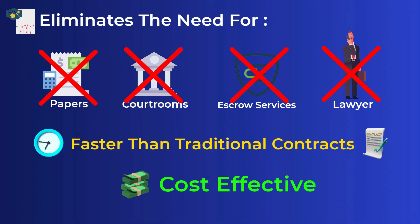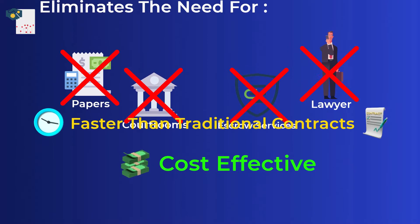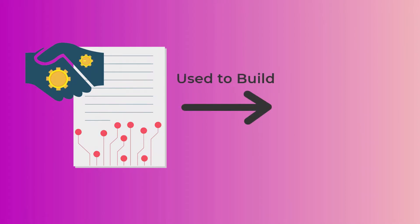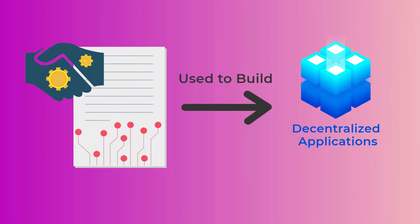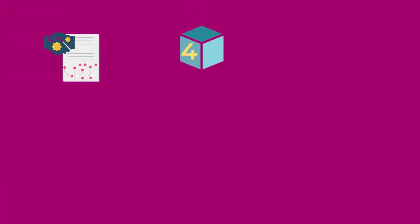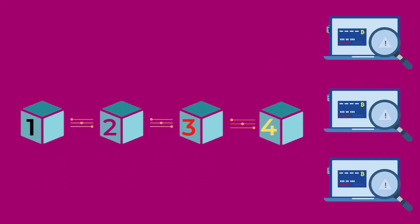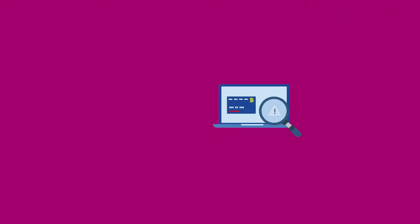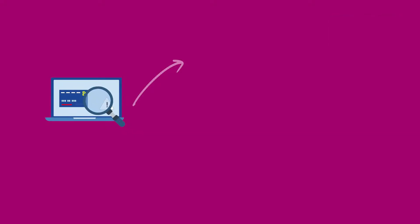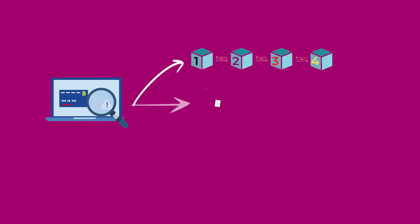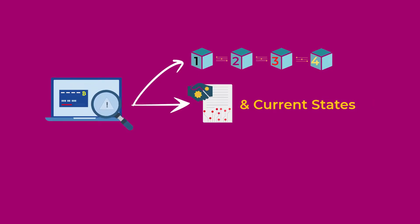The previous example is a very simple use for a smart contract. In fact, they can get very complicated, and today they are used to build a wide variety of decentralized applications, also called dApps. When a smart contract's code is written and deployed on the blockchain, it will be stored on all computers on the blockchain network, allowing anyone to view the code and verify its terms.